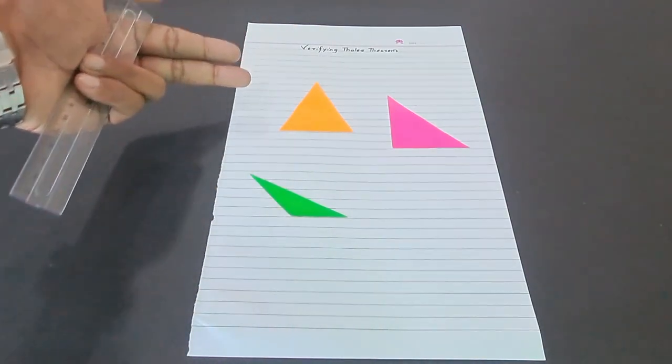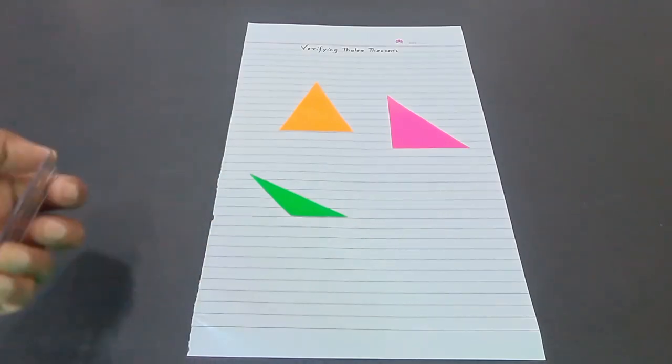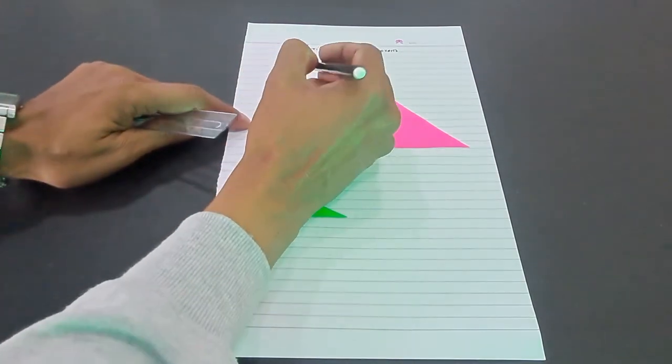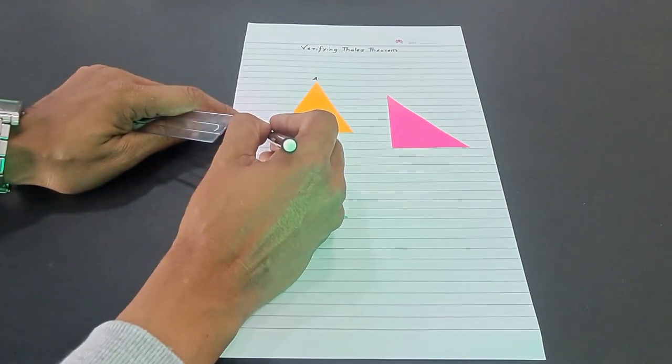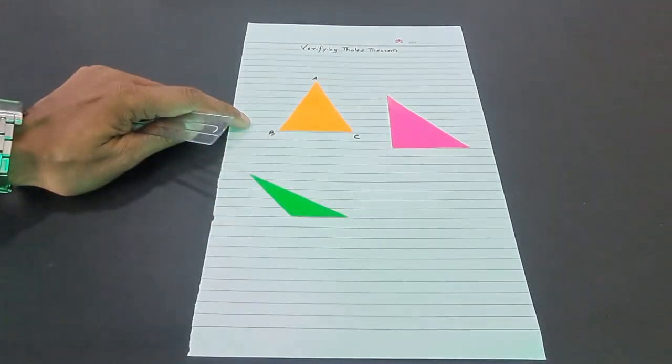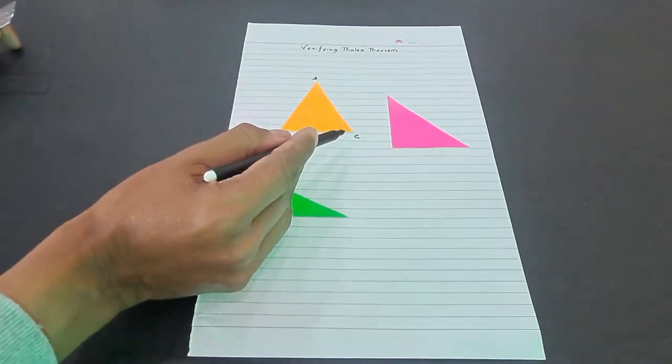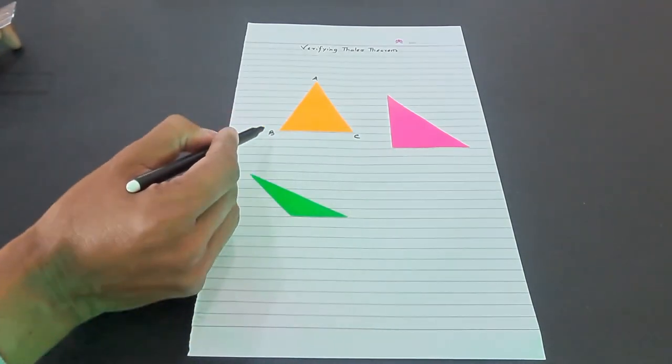For the first triangle, which is the acute angle triangle, we name it ABC. You can see that the base BC exactly aligns with a line on the ruled sheet.